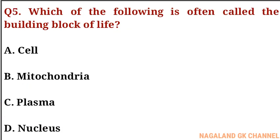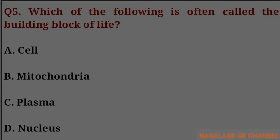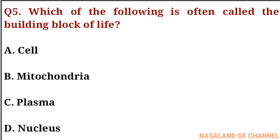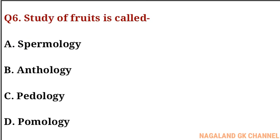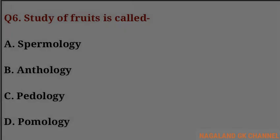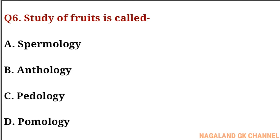Question number five: which of the following is often called the building block of life? The correct answer is option A, that is a cell. Question number six: the study of fruits is called what? The correct answer is option T, that is pomology.